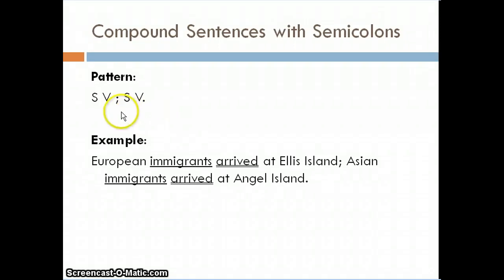The second type of compound sentence uses a semicolon to connect two independent clauses. The semicolon can be used on its own, and we generally use it when there is a clear connection between the ideas in both clauses. For example: 'European immigrants arrived at Ellis Island; Asian immigrants arrived at Angel Island.' Both clauses are about the same topic, so the relationship between their ideas is clear and evident.